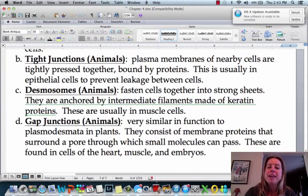Then we're going to have desmosomes. And desmosomes are going to be really important for fastening together cells in these sheets that can make really strong tissue. And so you're going to find these in like muscle cells. And if you think about muscle cells, they are really, really strong tissue.